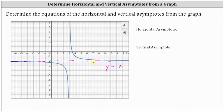Now let's sketch the vertical asymptote. Notice how the graph approaches this vertical line as the graph goes up as well as down — this vertical line is a vertical asymptote. Notice how the vertical line intersects the x-axis at three, so the equation of the vertical asymptote is x equals three.